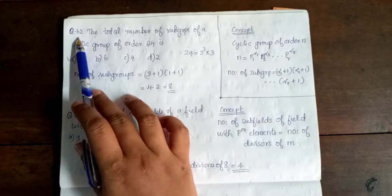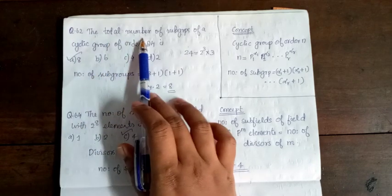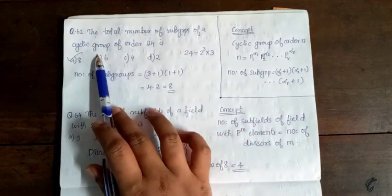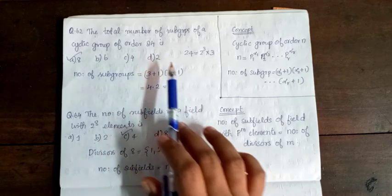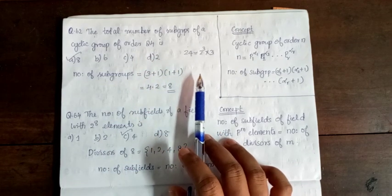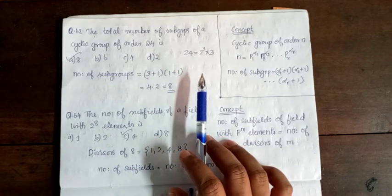Next, Question 62: The total number of subgroups of a cyclic group of order 24 is? We have a cyclic group of order 24 and need to find the number of subgroups.